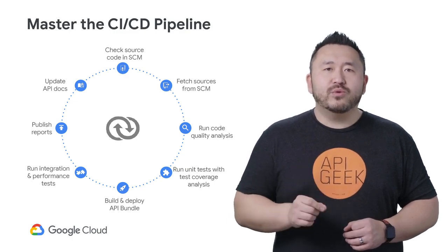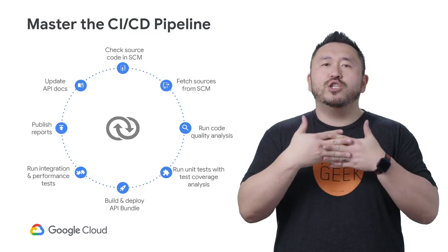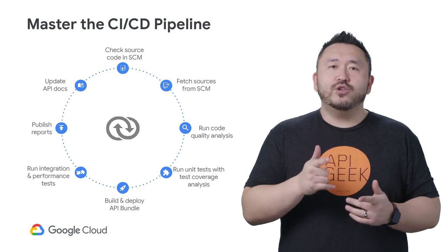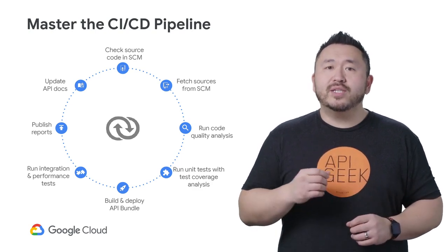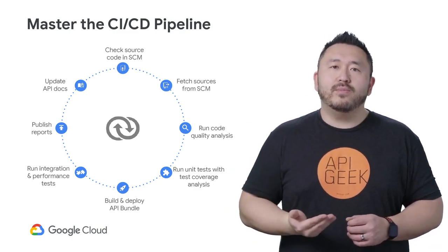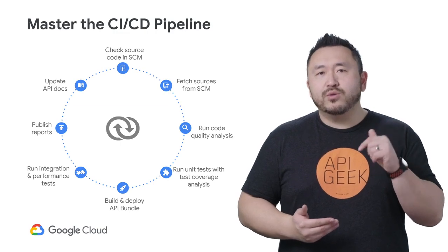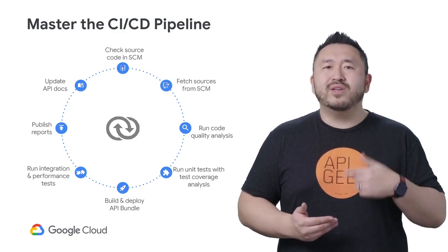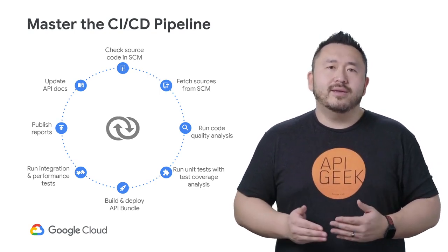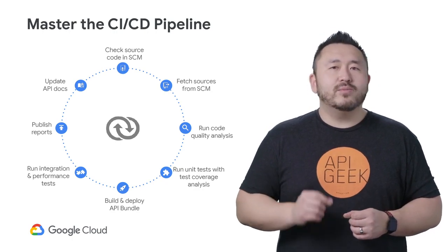The main goal is to prevent integration hell, where multiple developers begin integrating large chunks of code near the later phases of the project. To avoid this, the picture illustrates a recurring cycle — from code check-in, to testing, to deployment of the API bundle, to updating the API documentation. The purpose is to do this cycle on a frequent basis, or even on a per-code commit basis, using software like Jenkins to move code through each one of these steps. This process can be largely automated.